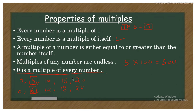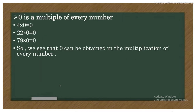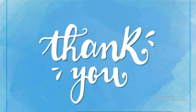Another property: 0 is a multiple of every number. For example, 4×0=0, 22×0=0, 79×0=0 — zero can be obtained in the multiplication of every number, so 0 is a multiple of every number. These are the properties of factors and multiples. Our next video will be on prime numbers and composite numbers. Please like, share, and subscribe to my channel to get the latest notifications. Thank you.